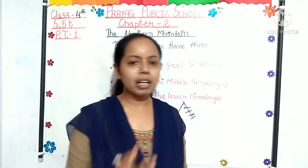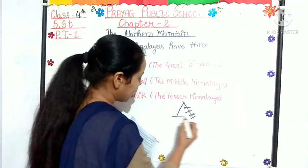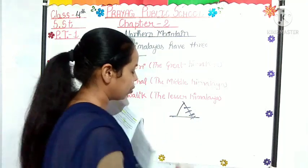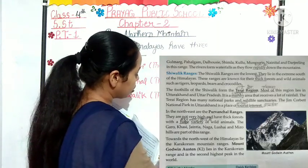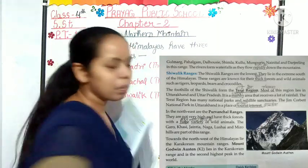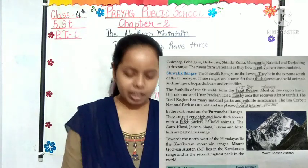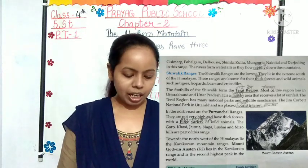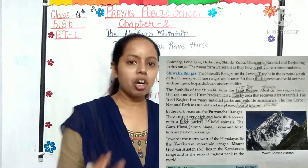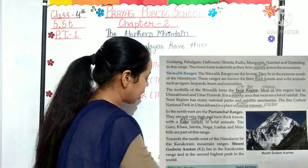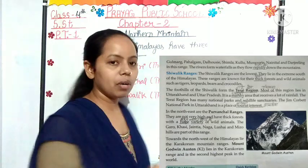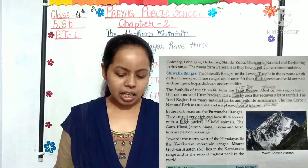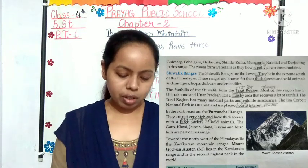The foothills of the Shivalik form the Terai region. The foot hill means the lower portion of any hill. So in the Shivalik foothills, Terai regions are found. Most of this region lies in Uttarakhand and Uttar Pradesh. It is a marshy area that receives a lot of rainfall.